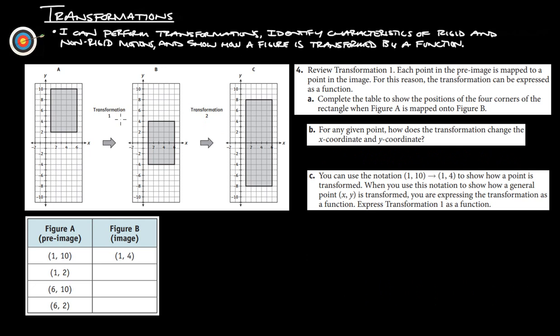Review transformation one here. Each point in the pre-image is mapped to a point in the image. For this reason, the transformation can be expressed as a function. Complete the table here to show the positions of the four corners of the rectangle when figure A is mapped onto figure B. So here's figure A. It gives us all the points here. One, ten, top left maps onto one, four, top left.